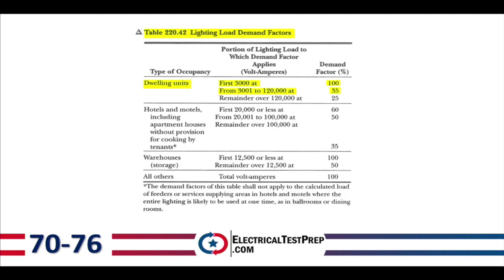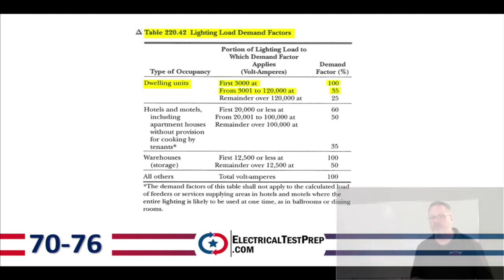Page 76 has a very important table — Table 220.42, Lighting Load Demand Factors. We take our square footage and rate it using this table. Both the square footage and the small appliance and laundry loads can be derated using this table. For a dwelling unit, it includes the lighting and general receptacle load, all incorporated in that 3 volt-amps per square foot.